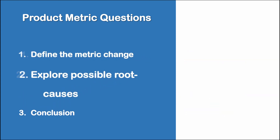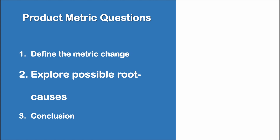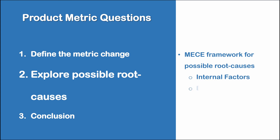Step two is to explore possible root causes of the change. Interviewers want to see that you are thinking of every possible problem which could cause the metric change you are investigating. To ensure you are thinking comprehensively and communicating clearly, you should create a MECE framework for possible root causes — where MECE stands for mutually exclusive and collectively exhaustive. Generally, one can split their investigation between internal and external factors. The root cause has to be internal or external, as there is no other option.